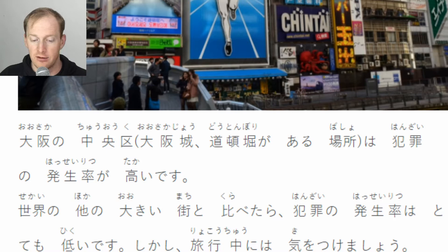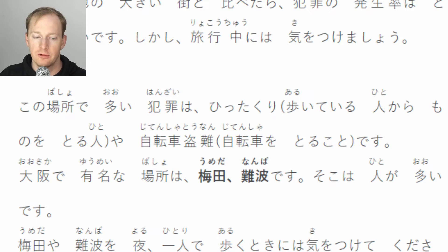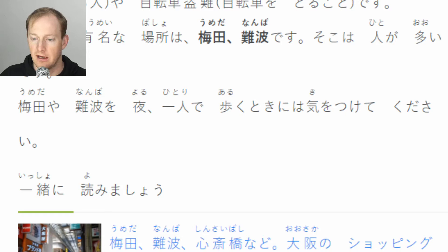大阪の中央区、大阪城、道頓堀がある場所は、犯罪の発生率が高いです。世界の他の大きい町と比べたら、犯罪の発生率はとても低いです。しかし、旅行中には気をつけましょう。この場所で多い犯罪は、ひったくり（歩いている人から物を取る）や自転車盗難です。大阪で有名な場所は梅田、難波です。そこは人が多いです。梅田や難波を夜一人で歩くときには気をつけてください。